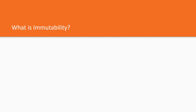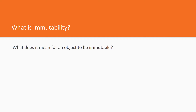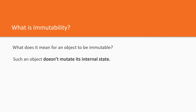Immutability is one of the core concepts in functional programming. When we are talking about mutability, we imply mutable or immutable objects. What does it mean for an object to be immutable? It means that such an object doesn't mutate or change its internal state.